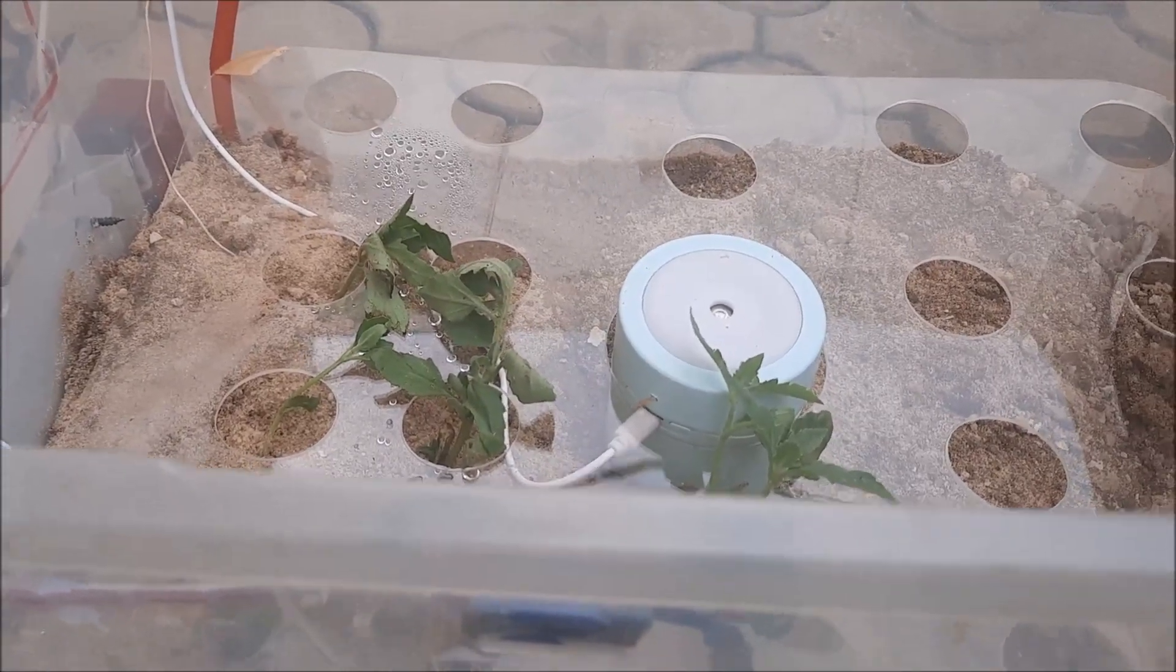And hence we come to the end of the testing phase for the IoT-based greenhouse project model. We can monitor and control the greenhouse parameters like temperature, humidity, and soil moisture level remotely from anywhere in the globe.